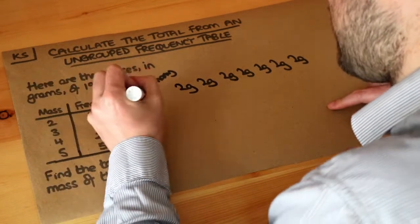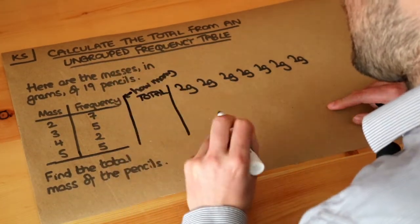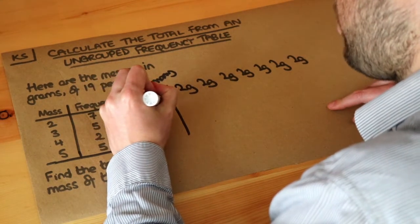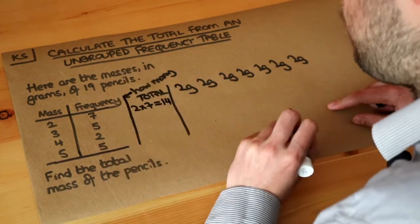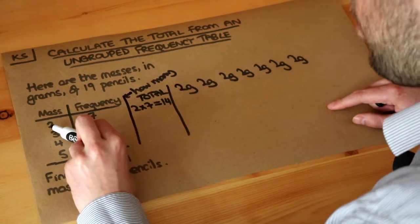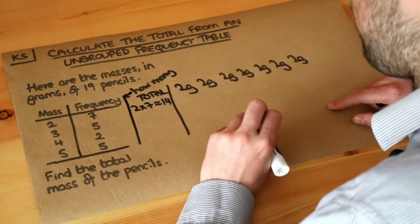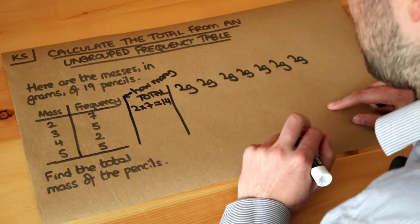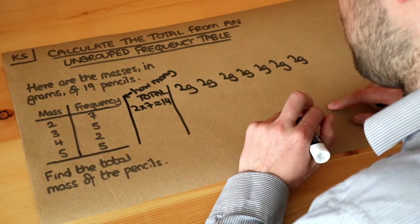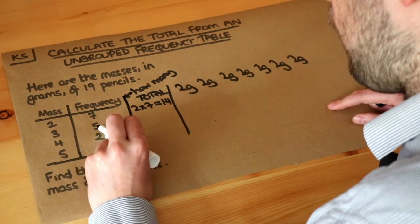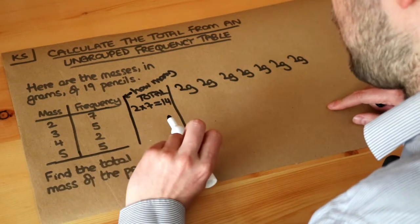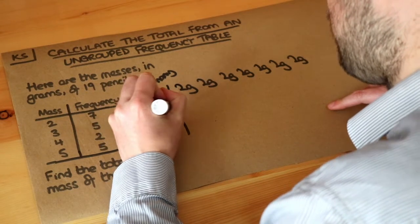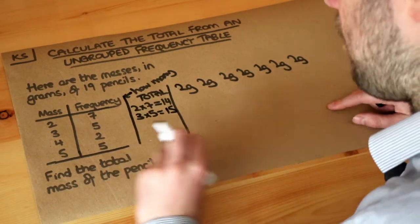So what we might want to add here is a total column. We just did 2 times 7, which is 14. So the total mass of these 2-gram pencils is 14 grams. What about here? We've got 5 pencils with a mass of 3 grams, so we just do 3 times 5 like we did above, and that's 15.